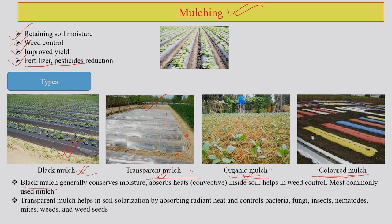Black mulch, as this picture shows, generally conserves moisture. As mentioned regarding greenhouses, if covered with black material, it absorbs heat inside the soils and helps in weed control. Transparent mulch helps in soil solarization — if you need more sunlight for your soil, you go for transparent mulching. It helps absorb radiating heat and controls bacteria, fungi, insects, nematodes, mites, and weeds by sheer heat treatment.